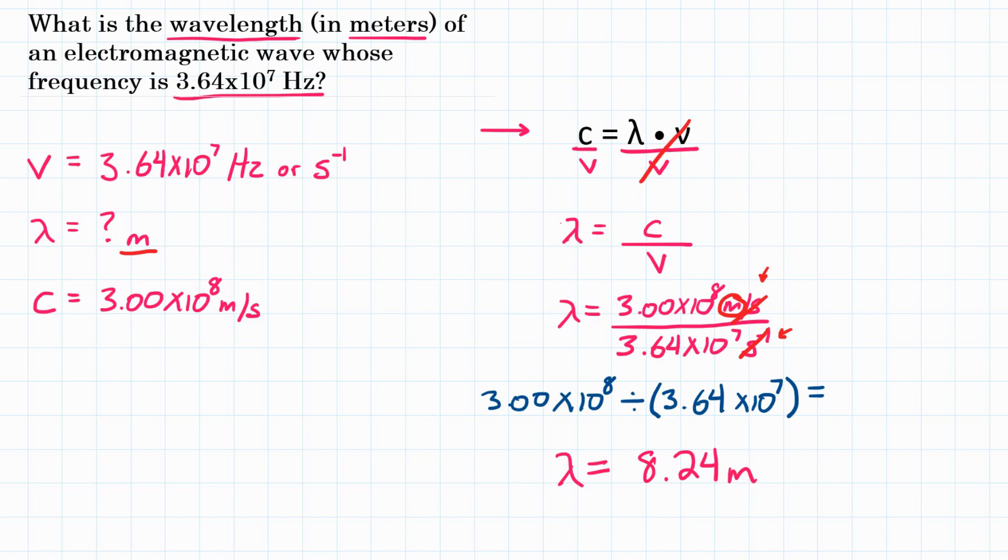So final answer, what is the wavelength in meters of an electromagnetic wave whose frequency is 3.64 times 10 to the 7th hertz? Well, that will be a wavelength of 8.24 meters.